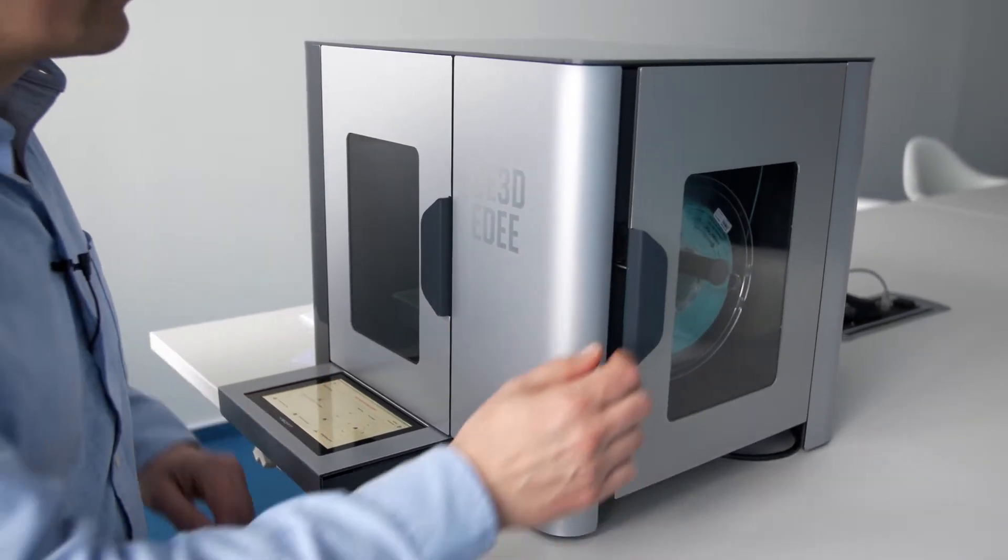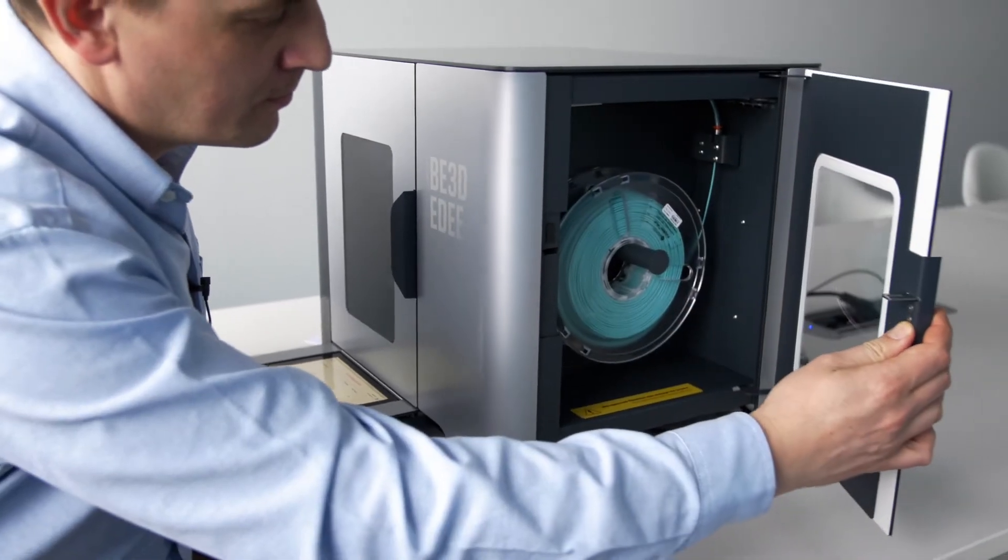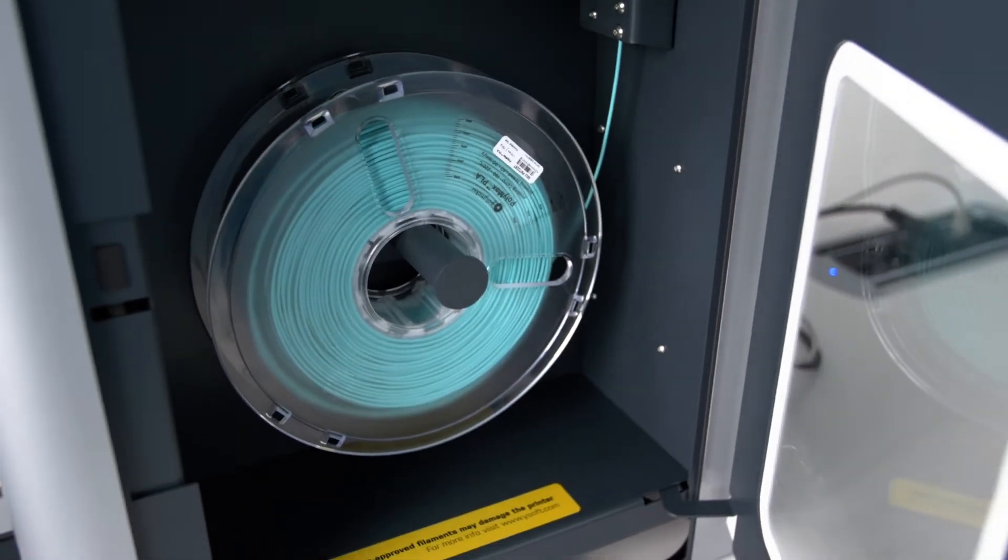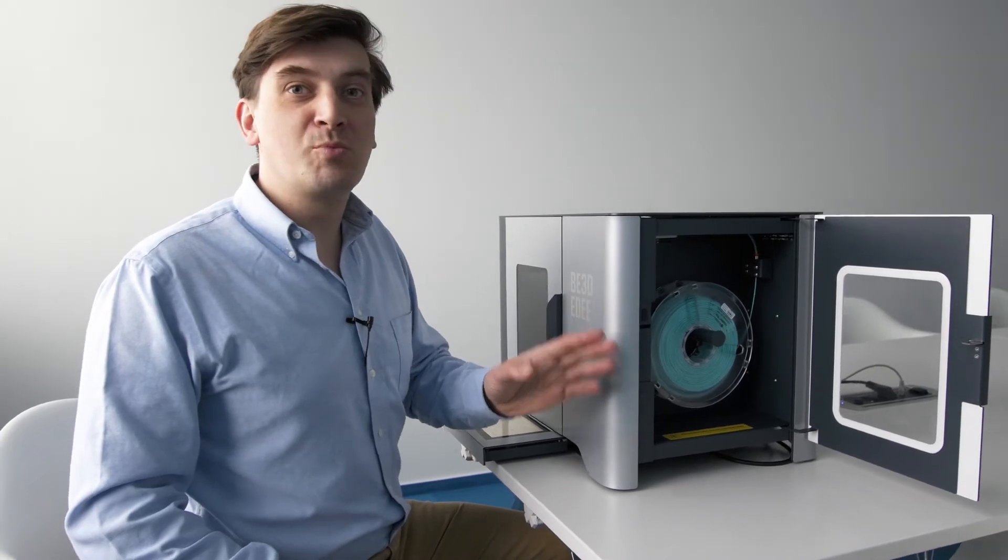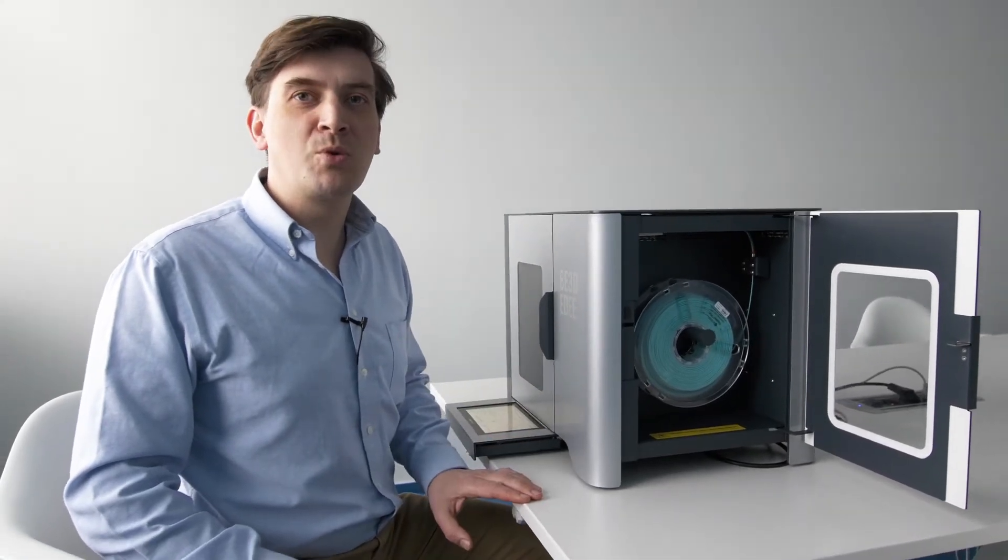The filament spool chamber door is on the side and is only unlocked by an administrator. This is where you will insert new spools when you are notified that the spool needs to be replaced.